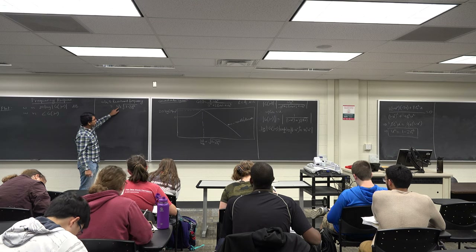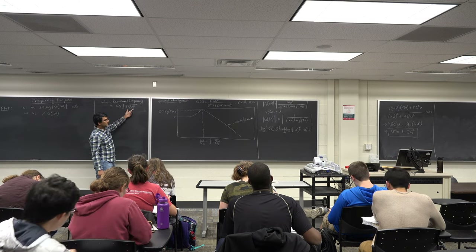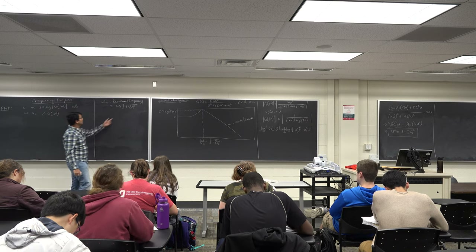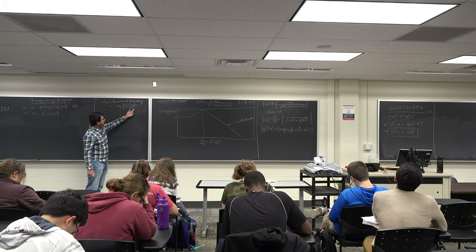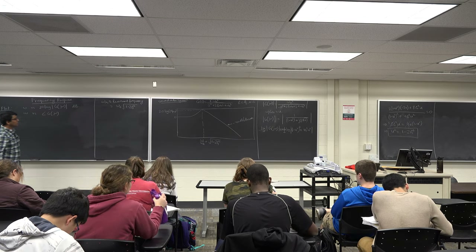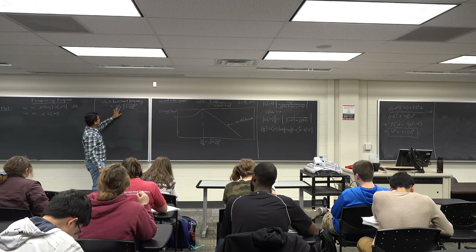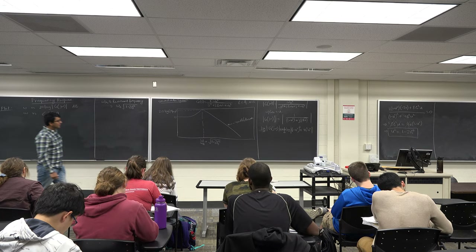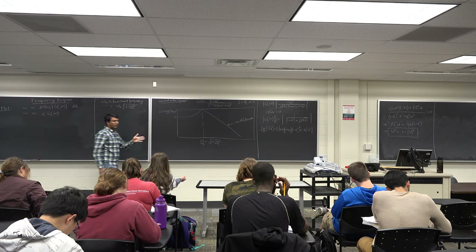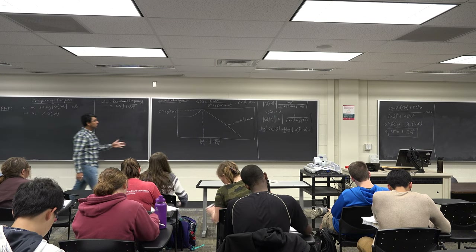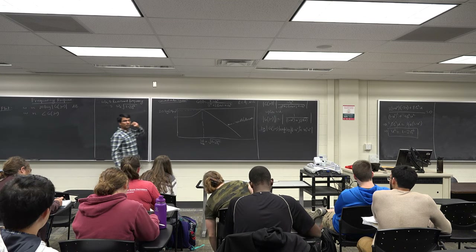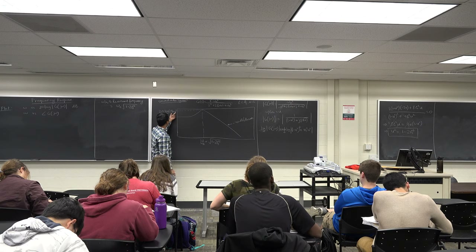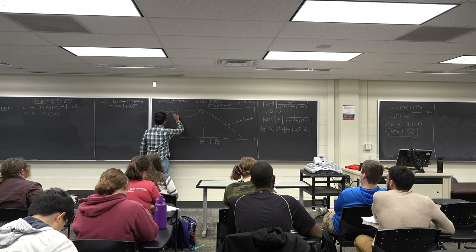The resonant frequency is smaller than the natural frequency, coupled with the damping factor. Remember from the RLC circuit discussion: ωn was a function of L and C, and ζ was a function of R. So the resistance in the circuit determines the resonant frequency of the RLC input-output system. What happens at this resonant frequency? If you give an input of sin(ωr·t), the output will reach its maximum gain, exactly equal to MPω.